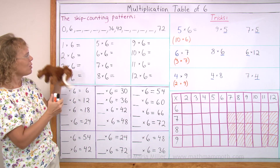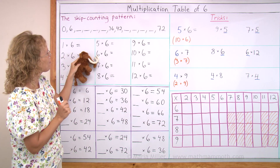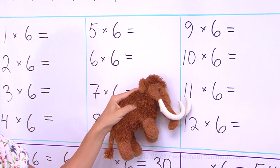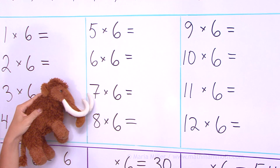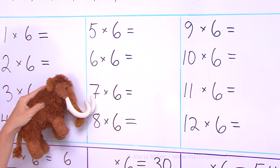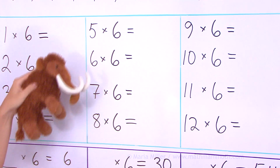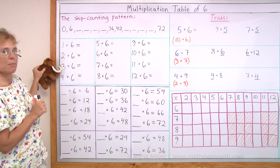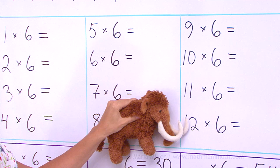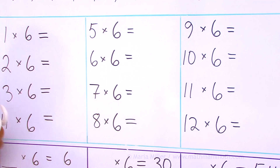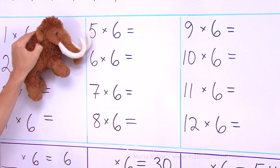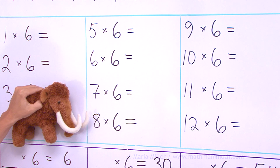And now I won't say the answers. Matthew will point to problems and you will answer as fast as you can. 6 times 6. 9 times 6. 11 times 6. 12 times 6. 9 times 6. 4 times 6. 7 times 6. 5 times 6. 8 times 6. And 6 times 6.